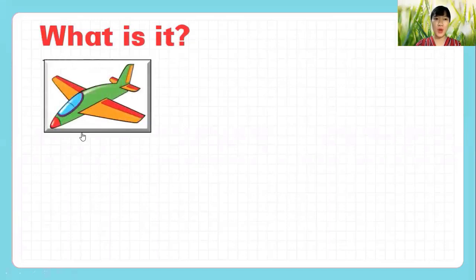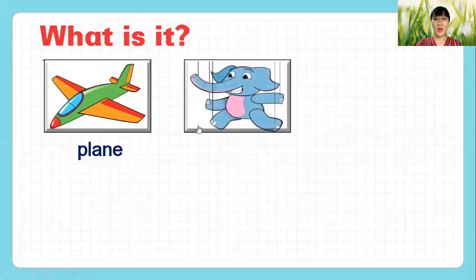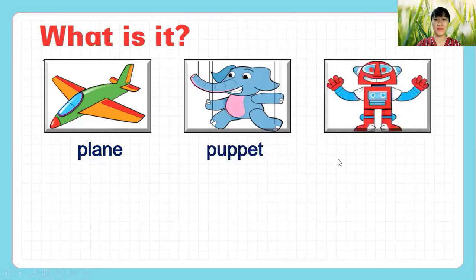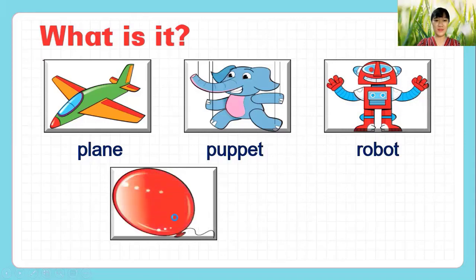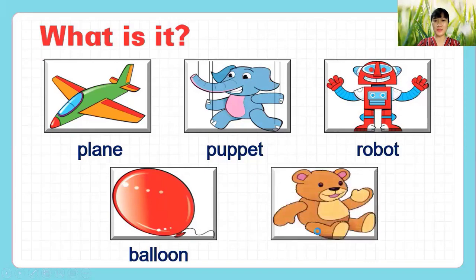What is it? What is it? Very good. Plane. It's a plane. What is it? Puppet. Good. Robot. It's a robot. Good. Balloon. Good job. Teddy bear. Very good.